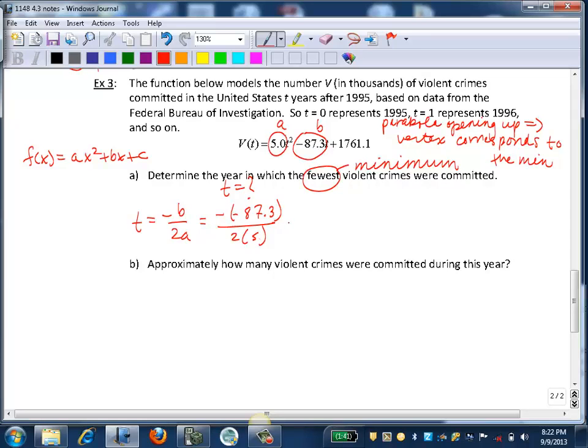So we can enter that into the calculator, or mental math. You know how I like mental math. We know that the opposite of a negative is a positive. We know 2 times 5 is 10. And if we divide 87.3 by 10, that's the same as moving the decimal point one unit left. So that's going to give us 8.73.